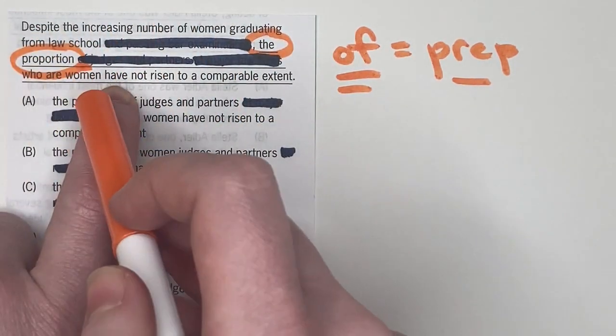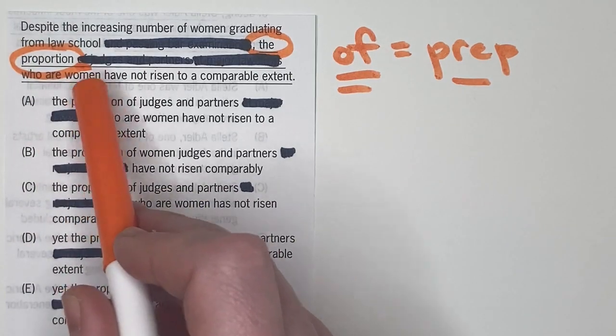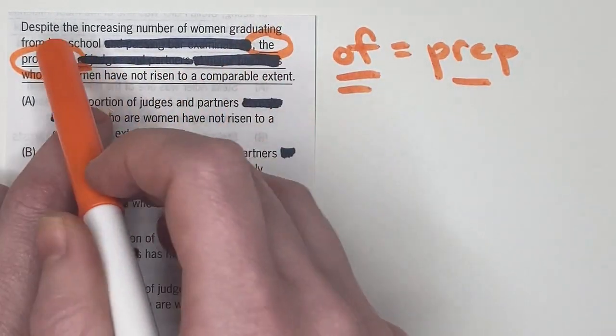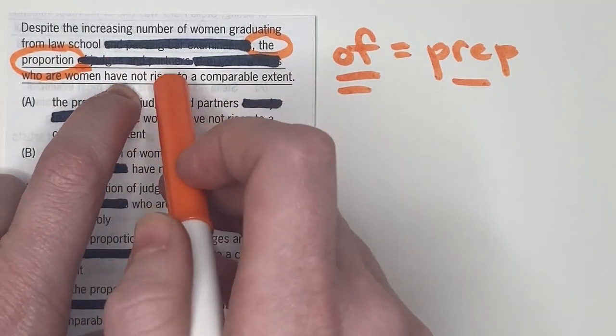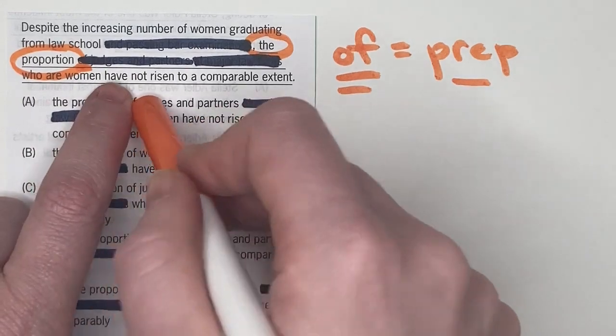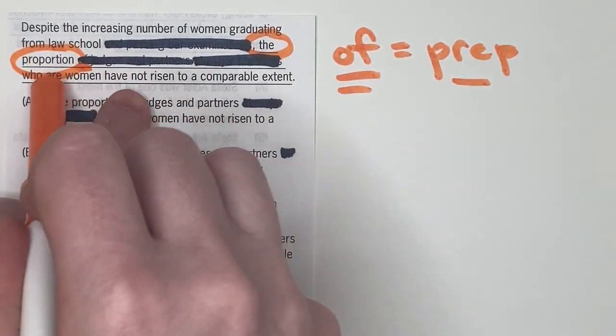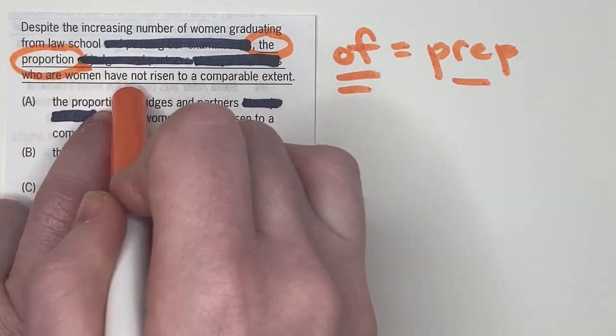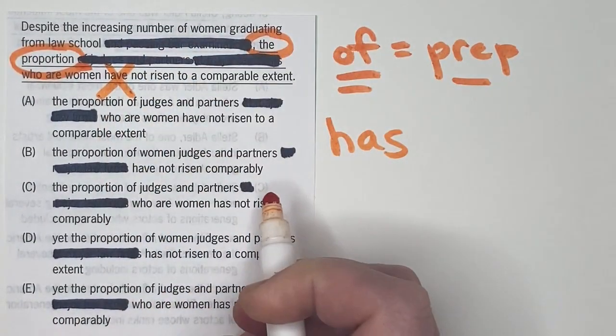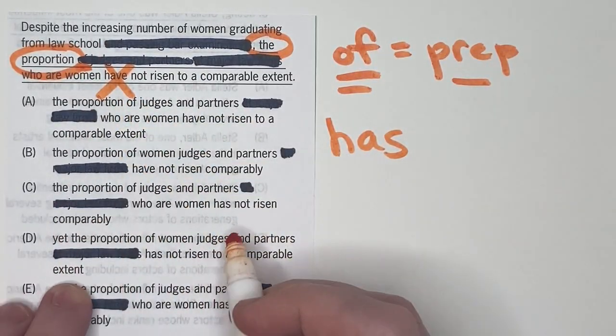So if it's singular, we need to make sure that it matches its verb. So the proportion, who are women? Again, who are women is just describing proportion. Actually, technically it's describing what I crossed off here, but that's fine. The proportion have not risen. Well, that doesn't make sense. We have a mismatch here. We wouldn't say the proportion have because have would go with a plural subject. We would say the proportion has. So we need this has, have is incorrect.